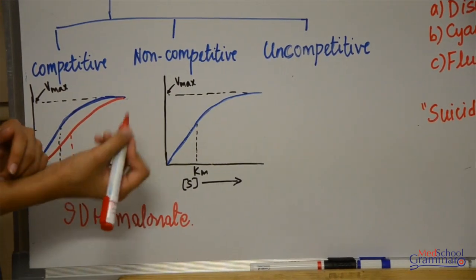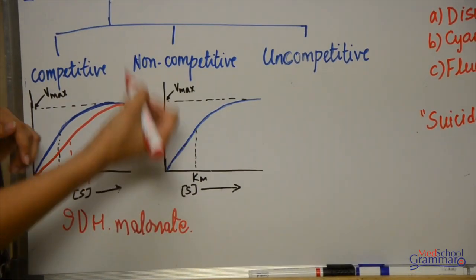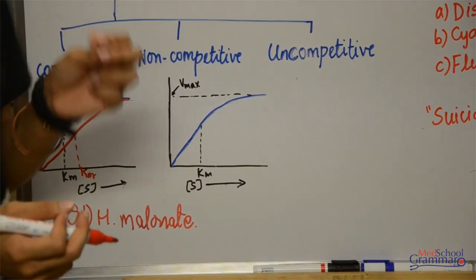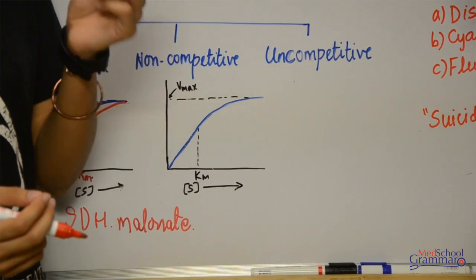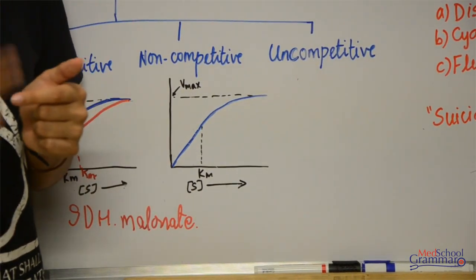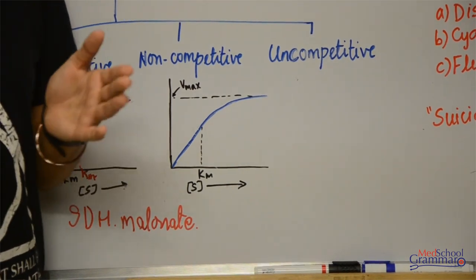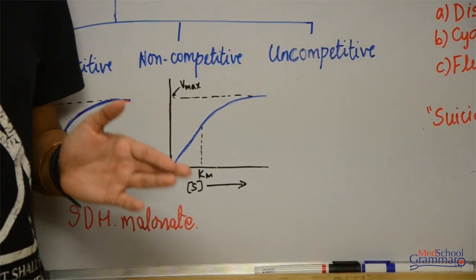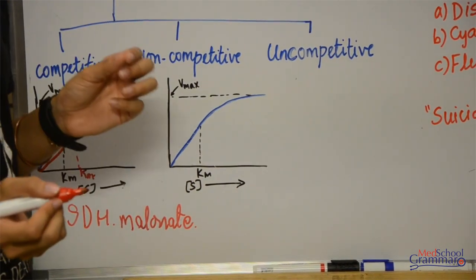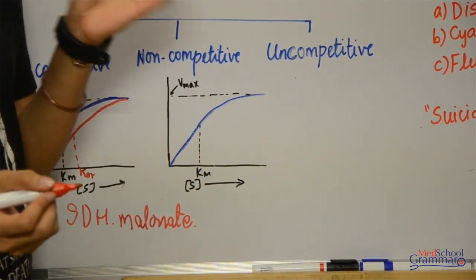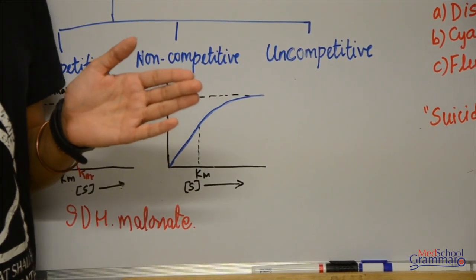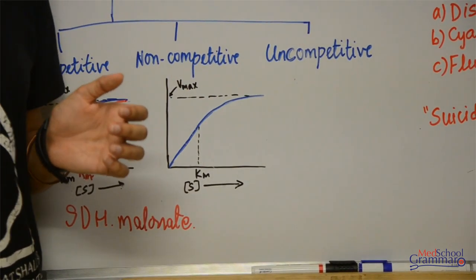Then we have non-competitive inhibition. In non-competitive inhibition, what happens is that your inhibitor comes and binds with the enzyme but not at the active site — it is at another site, any other site other than the active site. So in non-competitive inhibition, your inhibitor may bind with the enzyme directly, or it could bind with the enzyme-substrate complex that has already formed.